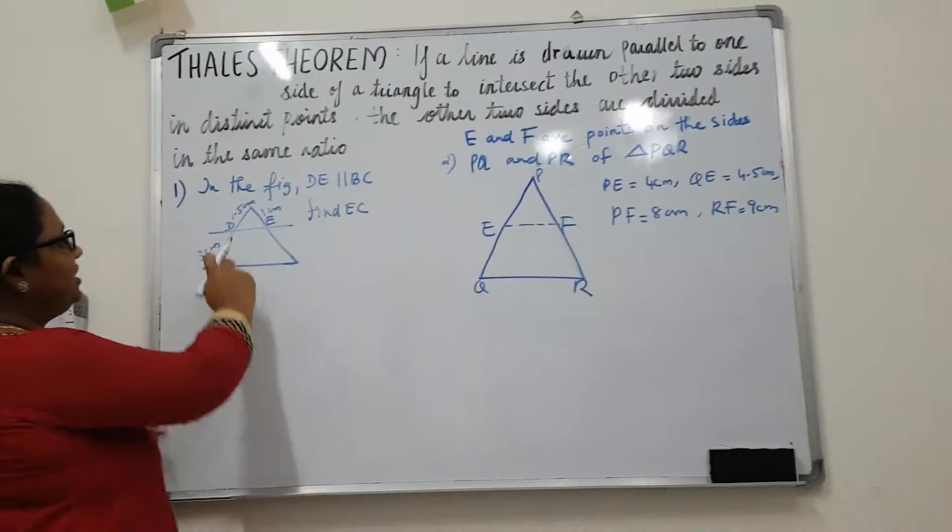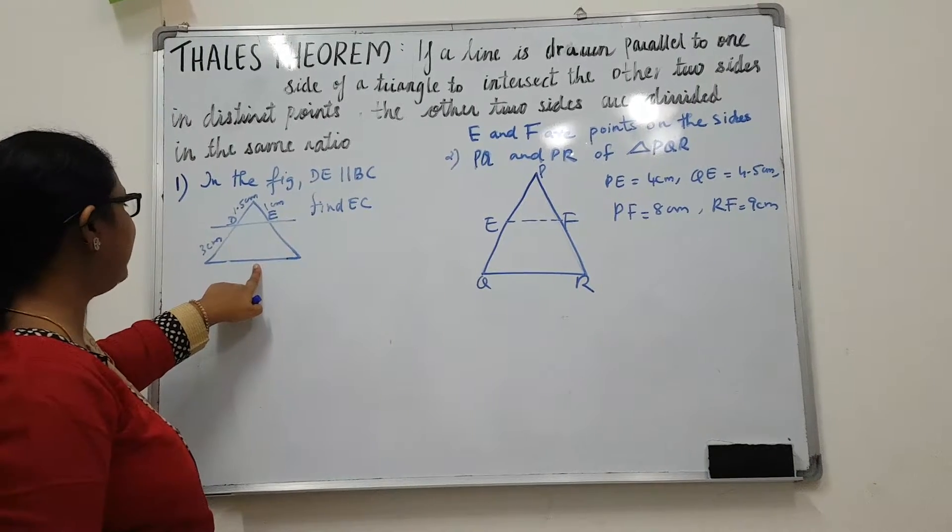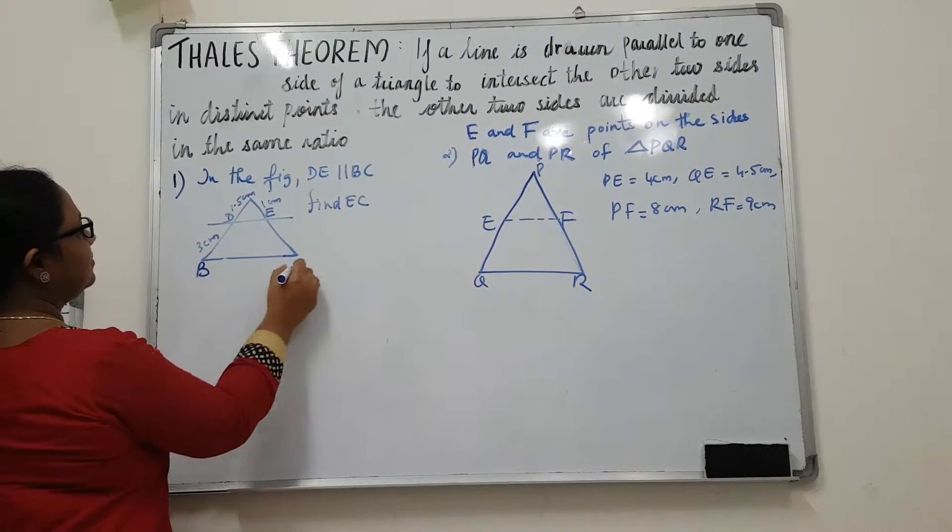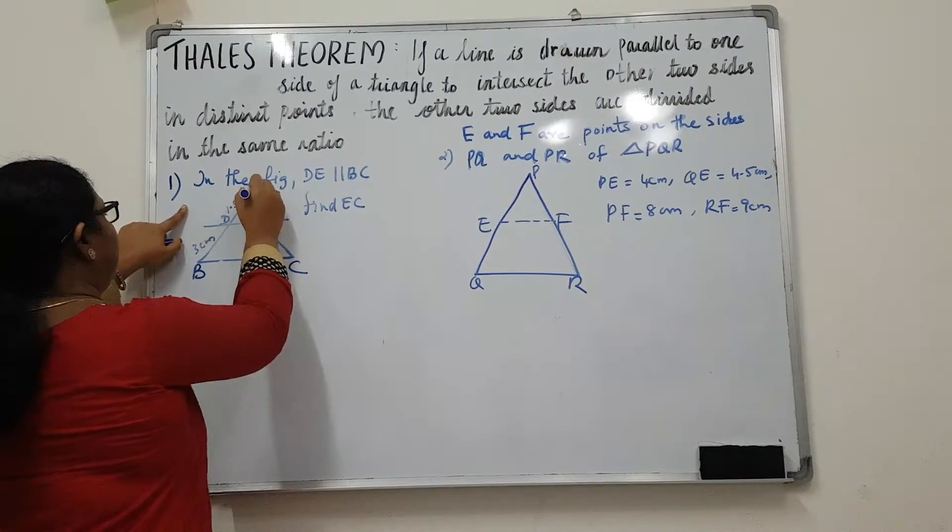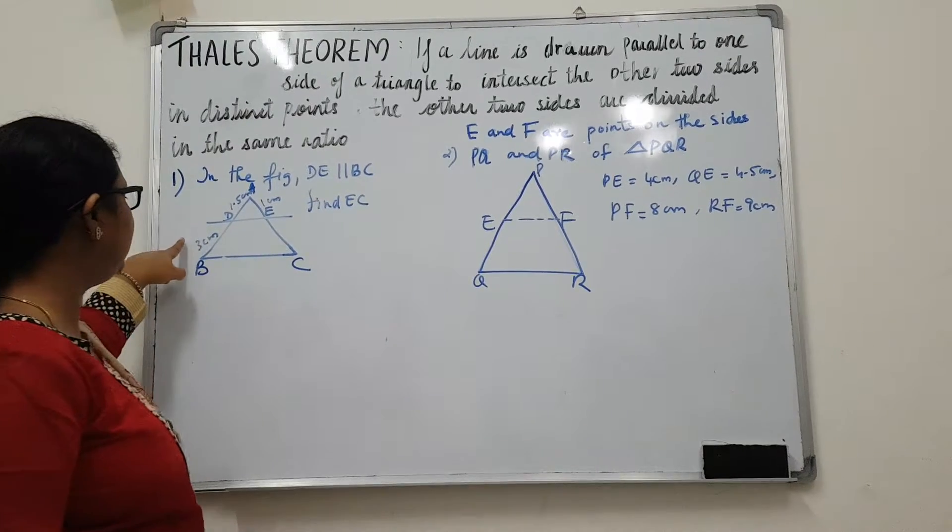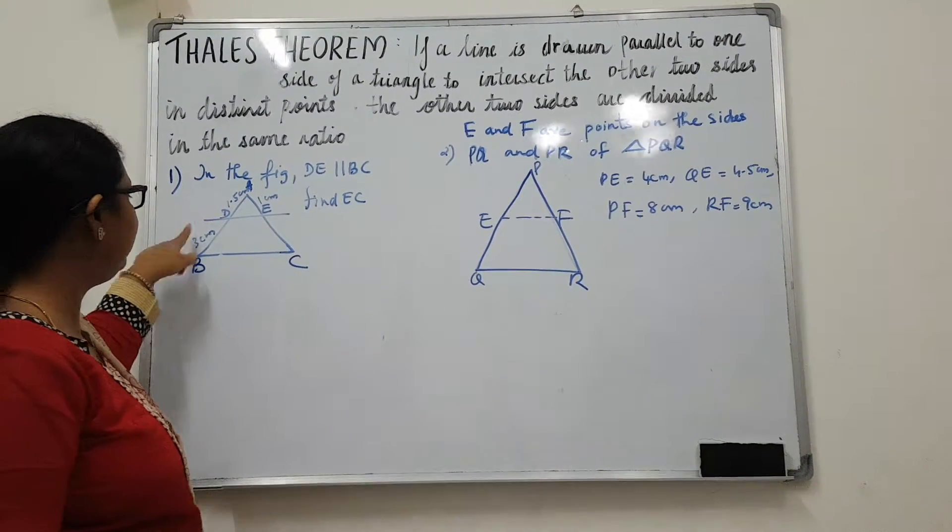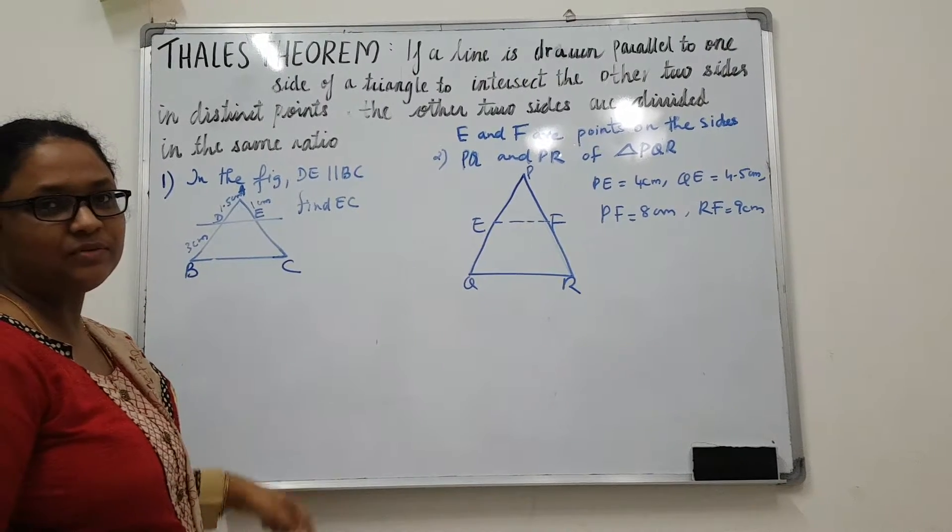So in this question, they have given you that BE is parallel to BC and we are supposed to find out this length. Here we can see that AD is 1.5 cm, DB is 3 cm, then AE is 1 cm, and EC we have to find out.